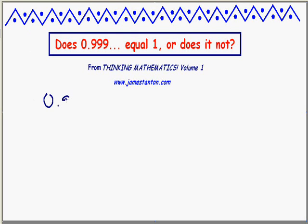Let's look at 0.99... Here it goes. 0.999... dot dot dot forever. Is it one or is it not?